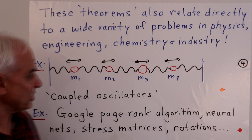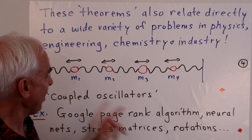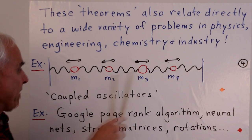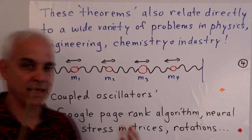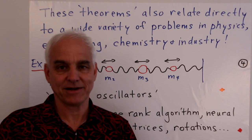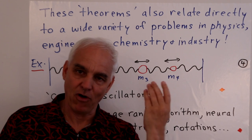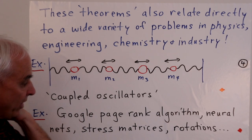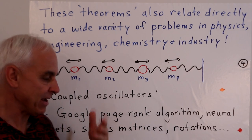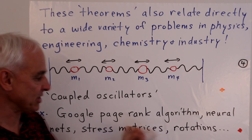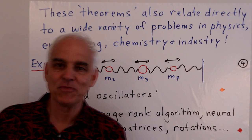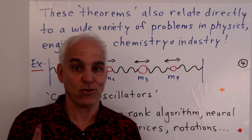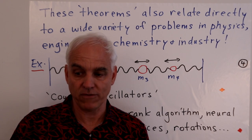Here's a picture of a bunch of springs that separate masses m_1, m_2, m_3, m_4, and they're allowed to oscillate this way because they're these springs. They have different masses, and you might be interested in understanding how these coupled oscillators behave. That's a kind of problem that, once you set it up in physics, involves these kinds of polynomials have to be solved. There's a wide variety of such problems. For example, Google page rank algorithm has some connection with this, neural nets, stress matrices, rotations. One can give a very, very long list of real life applications, ultimately of the fundamental theorem of algebra. So it's not just a theoretical tool. It's also very important for practical applications.